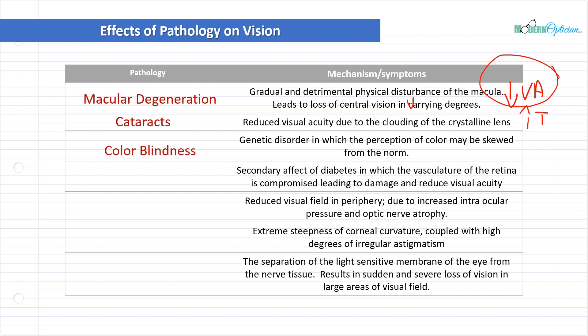Colorblindness — we didn't talk about this one. It's not uncommon but not really something that usually has a huge impact on our day-to-day. It's a genetic disorder in which the perception of color may be skewed from the normal. Colorblindness is not an enormous concern in a dispensary. There are tests that can be done — you could do Ishihara plates. Most people will tell you if they're colorblind. We're not testing color; we're just testing vision and visual acuity.